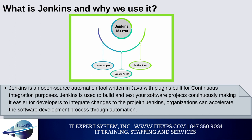Jenkins achieves continuous integration with the help of plugins. Plugins allow the integration of various DevOps stages. If you want to integrate a particular tool, you need to install the plugins for that tool — for example, Git, Maven 2 Project, Amazon EC2, HTML Publisher, etc.